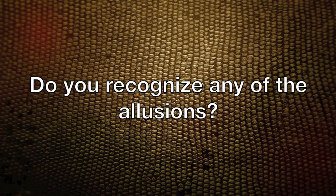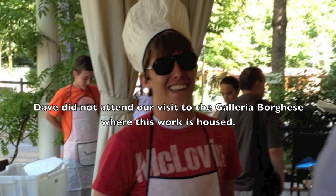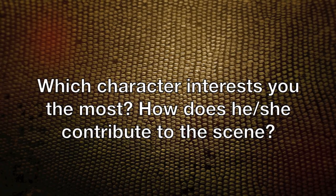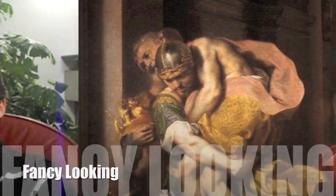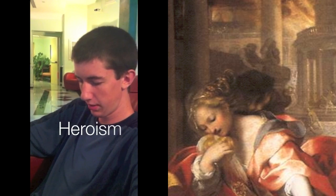Do you recognize any of the allusions? — No. — Aeneas carrying his father out of the city of Troy, along with his mother and his child. Which character interests you the most and how does he or she contribute to the scene? — This strikes me the most because I can see the uniform and it looks pretty fancy. — The character that strikes me most is the wife. You can see the clear look of despair on her face as she does not believe they have any chance of escaping the city. However, it struck me because the contrast with the scene is based on heroism, and clearly Aeneas is the hero of this particular story.